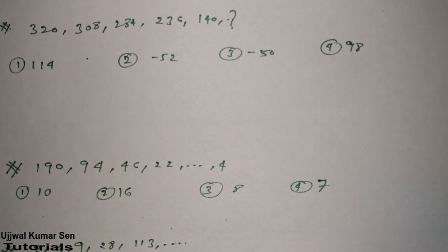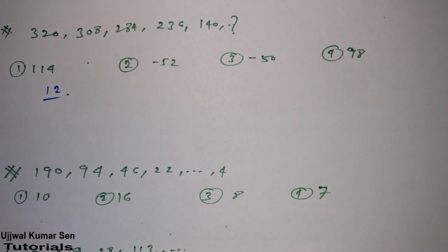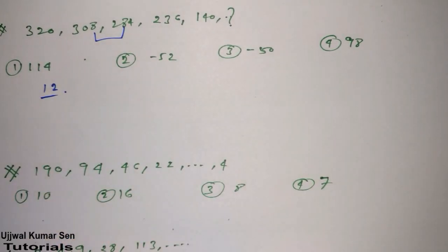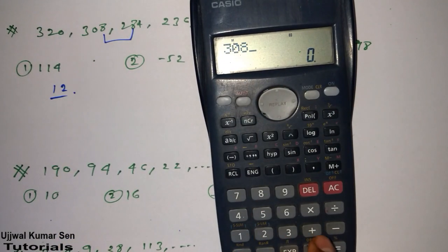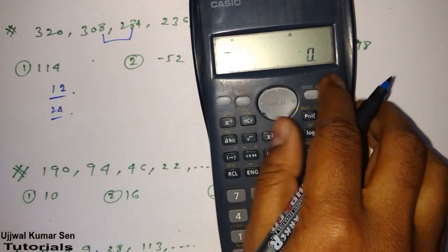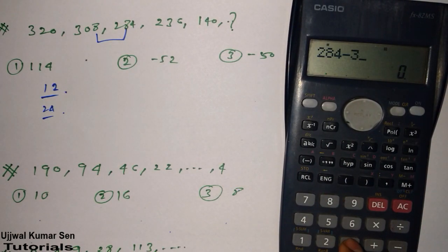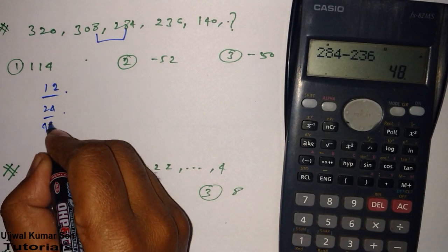That is 320, next is 308, next is 284, next is 236, and next is 140. See here, 320 and 308, difference is 12. From here to here, how much difference is there? Just use calculator. Minus 284, 24. So we got something here. Then here to here, find out difference. 284 minus 236, 48. That means they are multiplying with 2, then they are getting the values.